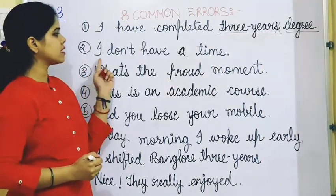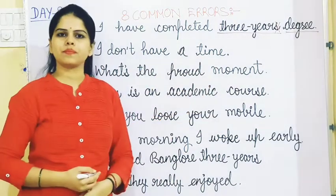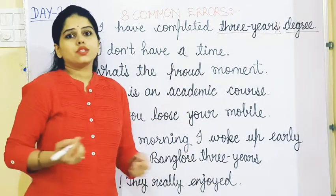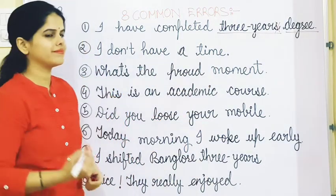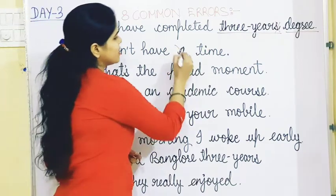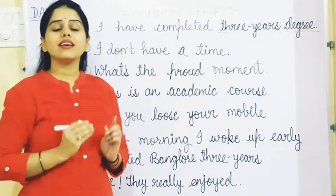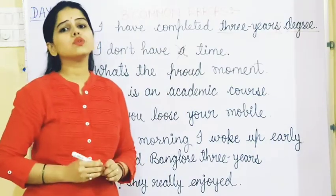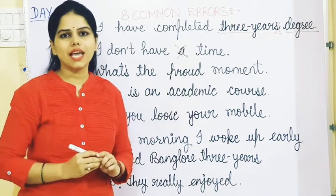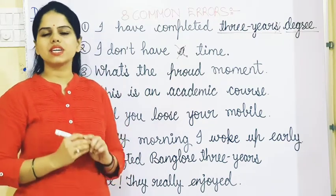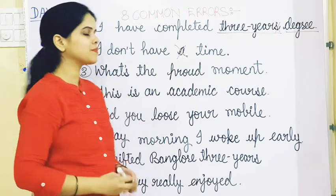The second sentence is: I don't have a time. What's wrong? The mistake is the article 'a'. We never use any article before 'time'. So the correct sentence is: I don't have time.